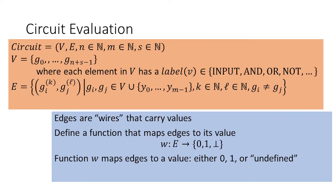Our intuition tells us that edges in our circuit don't just connect the gates together — they're actually carrying information from one gate to the next. To capture this idea, we're going to define a function W that identifies the value carried by one of the wires. This value is going to be zero or one, but we're also going to add an extra value representing unknown or undefined, shown by that perpendicular lines symbol.